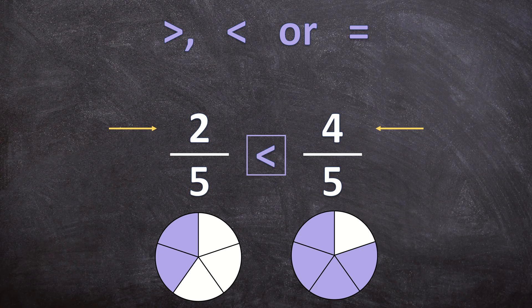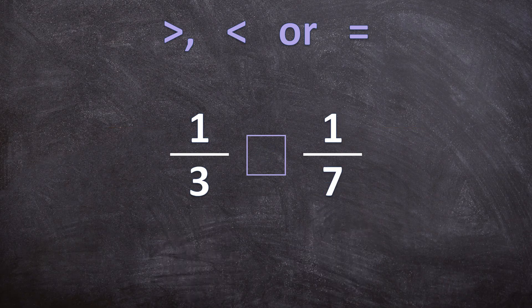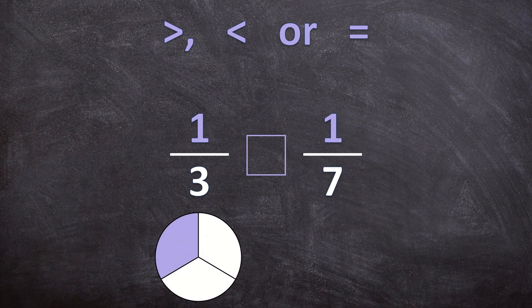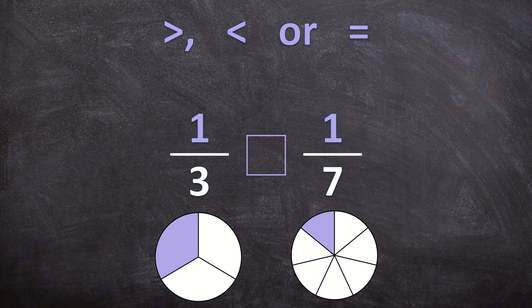Now let's say our denominators are not the same but our numerators are the same. For example, we have 1 over 3 and 1 over 7. Here our numerators are the same. So let's still take circles as our example — the one circle is going to be divided into 3 pieces and the other circle is going to be divided into 7 pieces.